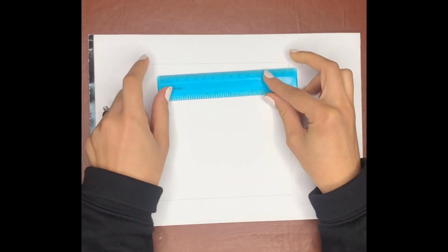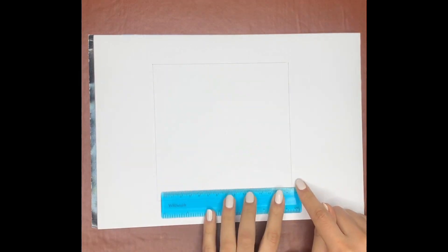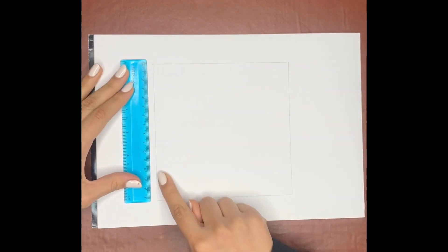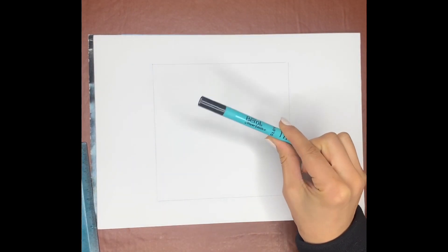So you need to take your ruler and measure a nice square on your piece of paper. Doesn't matter how big it needs to be, just a square on your paper because that's the area you're going to work in.